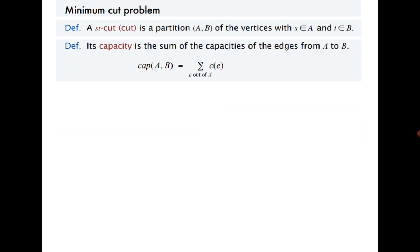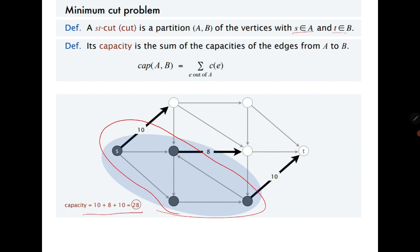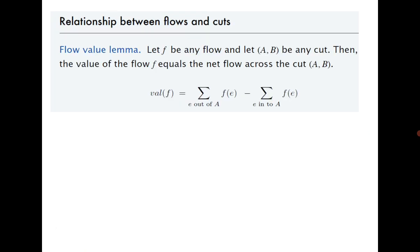Recall the minimum cut problem. A cut is a partition of the vertices such that s must belong to A and t must belong to B. This cut's capacity is the sum of the capacities of all the edges leaving the cut. The first result from last class: the value of the flow equals the summation of f(e) for edges out of A minus f(e) for edges into A, proved using the flow conservation law. The value of the flow can never exceed the capacity of any cut A-B.